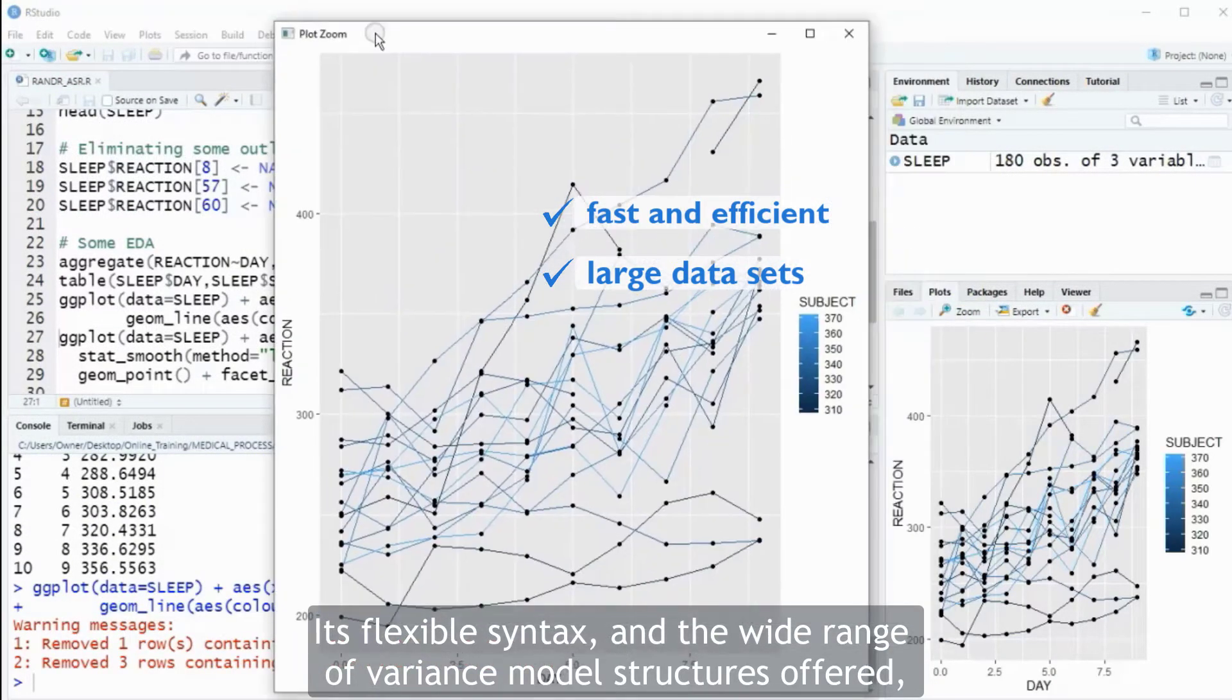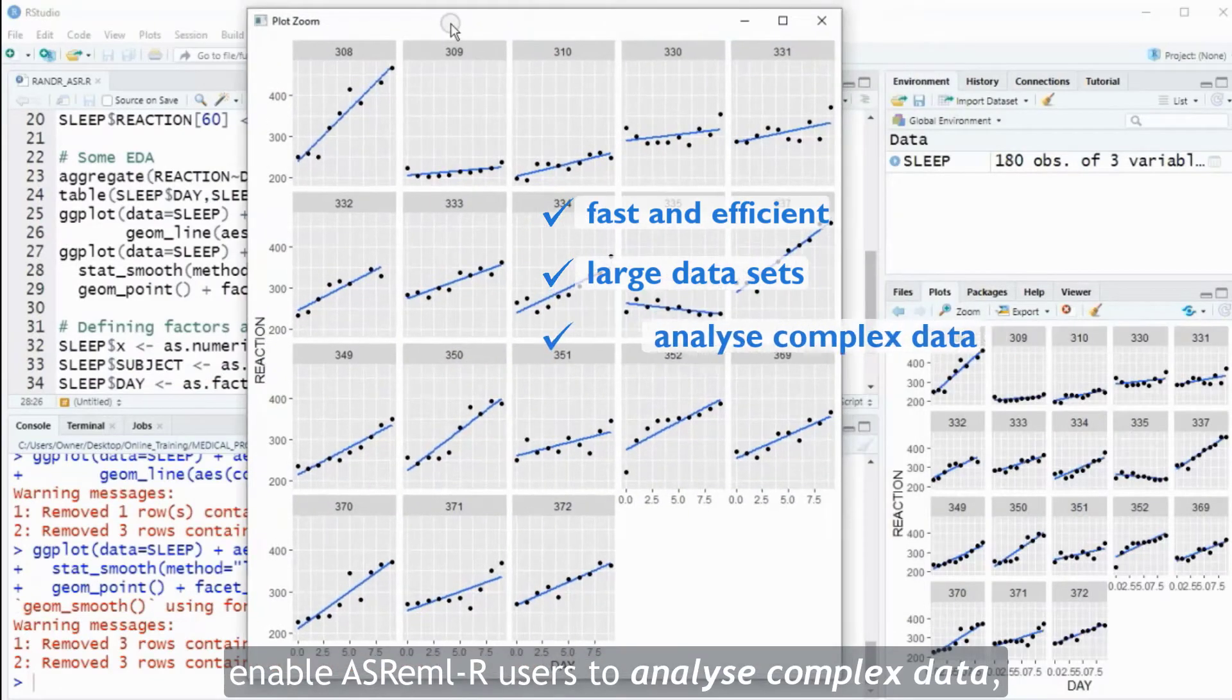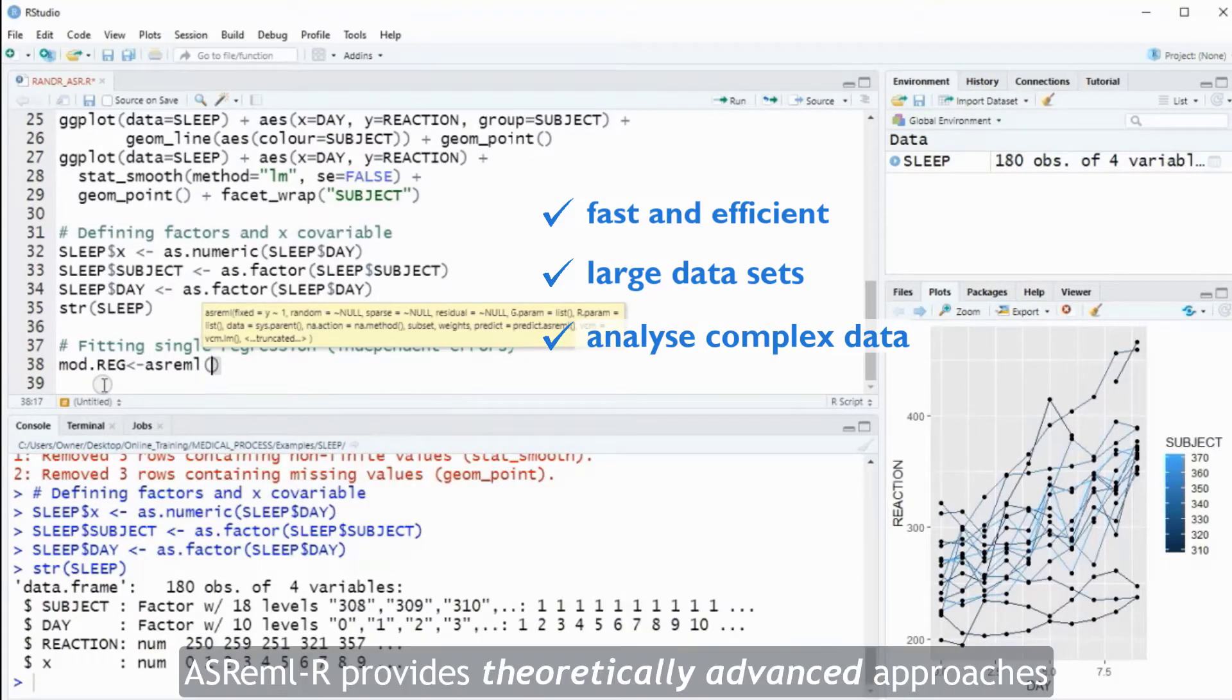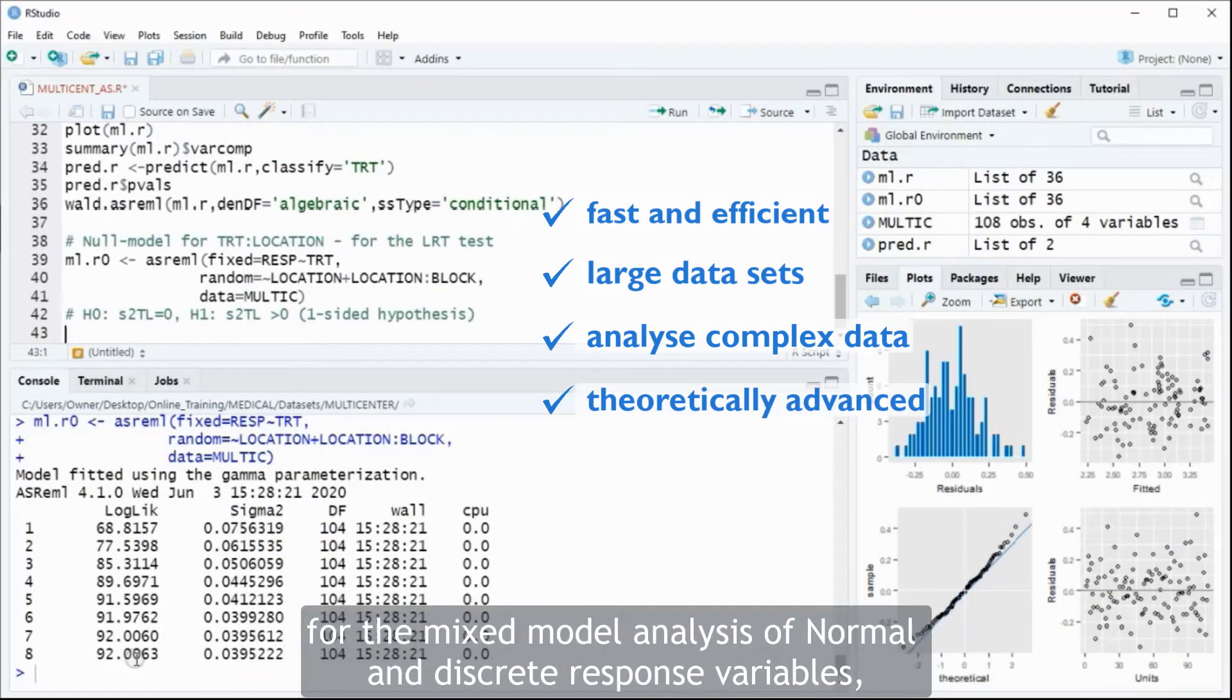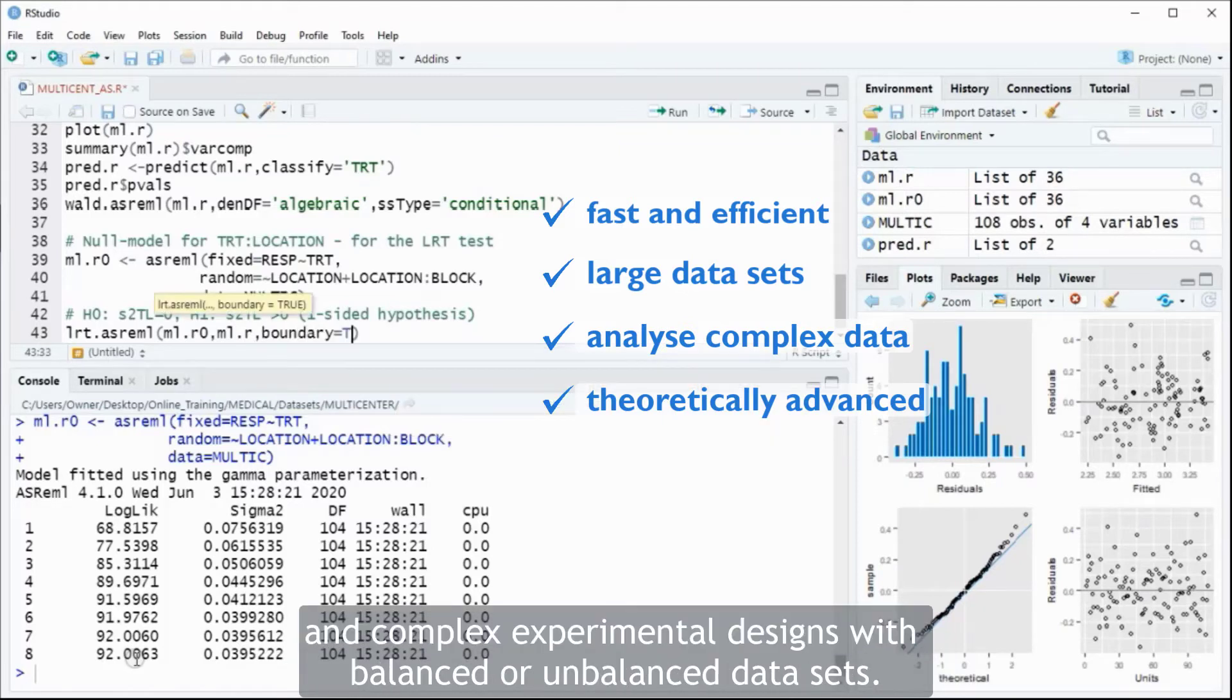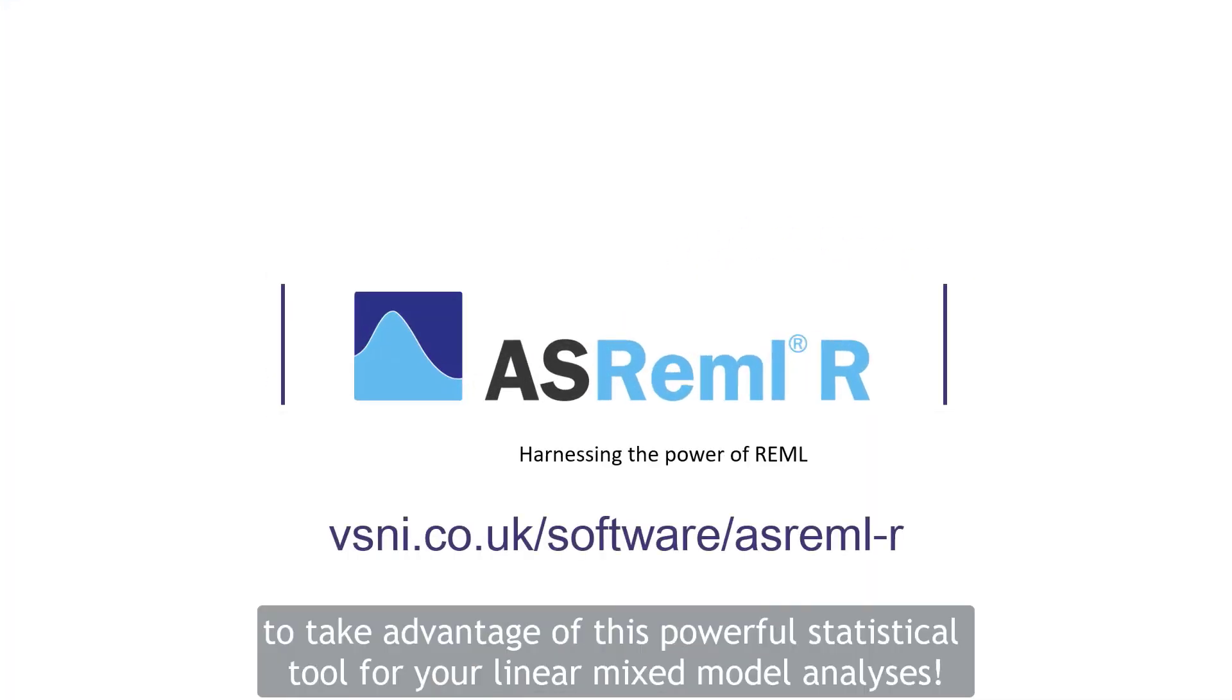Its flexible syntax and the wide range of variance model structures offered enable ASRML R users to analyze complex data such as multi-site and multi-trait data and to accommodate pedigree and molecular information easily. ASRML R provides theoretically advanced approaches for the mixed model analysis of normal and discrete response variables as well as analysis of correlated data, repeated measures, multi-variate analyses and complex experimental designs with balanced or unbalanced data sets. Contact VSNI to take advantage of this powerful statistical tool for your linear mixed model analyses.